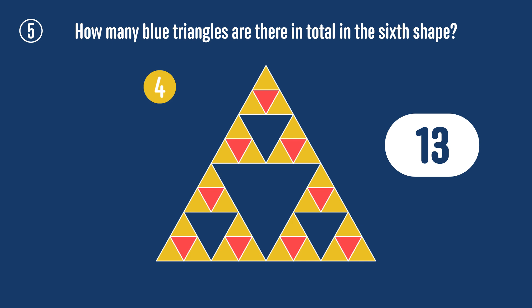At each level, every new triangle in the previous shape gets three new blue triangles around it in the next one. So the fifth shape will have an extra 3 times 9 or 27 triangles, bringing the total to 40.